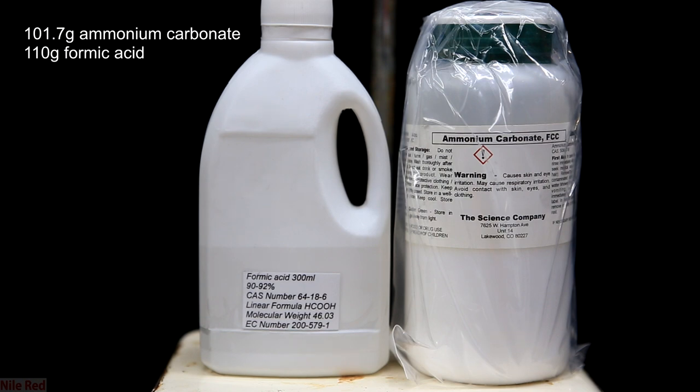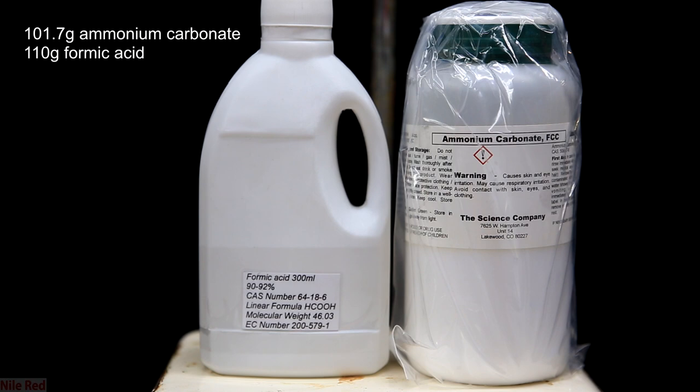Formic acid is actually used by beekeepers to get rid of mites, so it's not very hard to obtain. I bought my formic acid off eBay and I bought my ammonium carbonate from the science company. The ammonium carbonate could just as easily be purchased from eBay though.